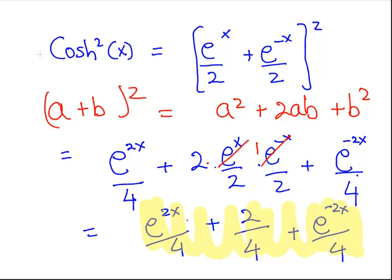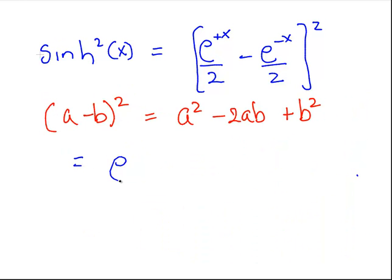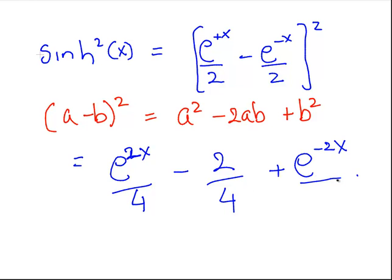So it's just using the same answer again. So this is e to the 2x over 4 minus 2 over 4 plus e to the minus 2x over 4.